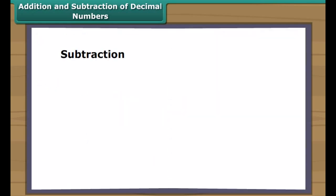Similarly, we can subtract one decimal number from another. We subtract the digits at the right side of the decimal first, followed by those at the left side.